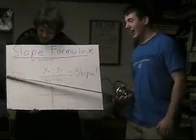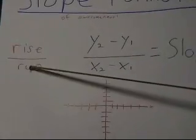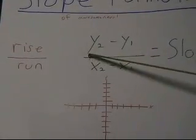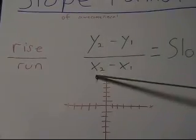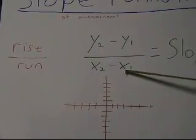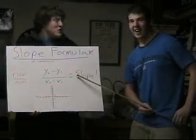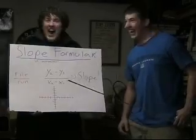Slope is rise over run, which is y sub 2 minus y sub 1 over x sub 2 minus x sub 1. That equals the slope! No way!